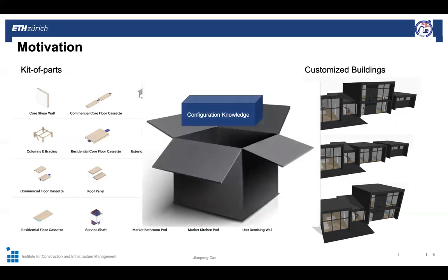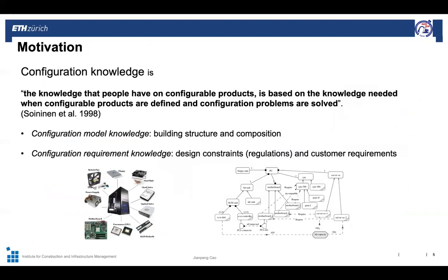The configuration knowledge defines how a product is designed and how it can be varied. It includes two aspects: first, model knowledge defines product structure and composition; second, requirement knowledge defines design constraints and customer requirements. Ontology modeling for configuration knowledge has been studied in other manufacturing products, such as personal computers, machines, and automotive.